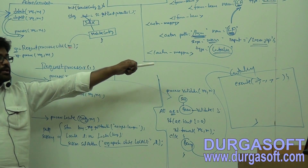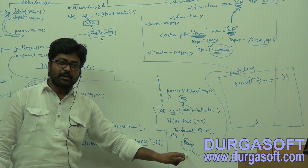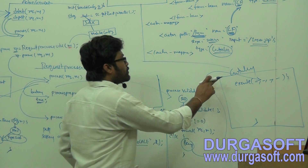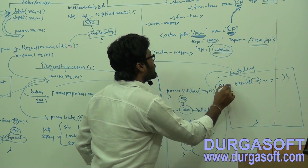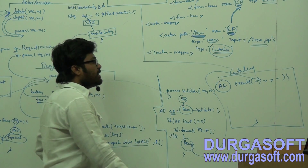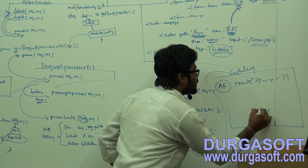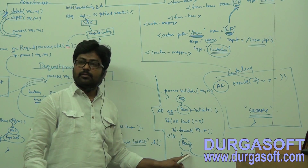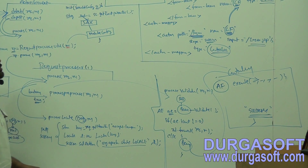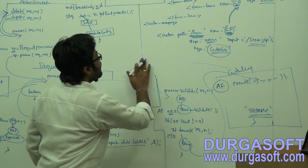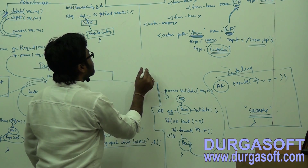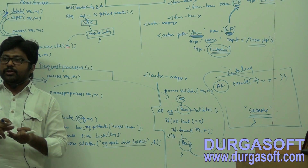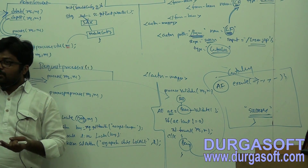That same bean is forwarded to the controller. In the controller, you can get your valid bean data and process it. After completion of processing, you need to return an ActionForward object. The return type is ActionForward. In that ActionForward, you should forward success or failure names only. How many mappings are required for each action? Four: form-to-bean, bean-to-form, bean-to-controller, and controller-to-success-page or failure-page.